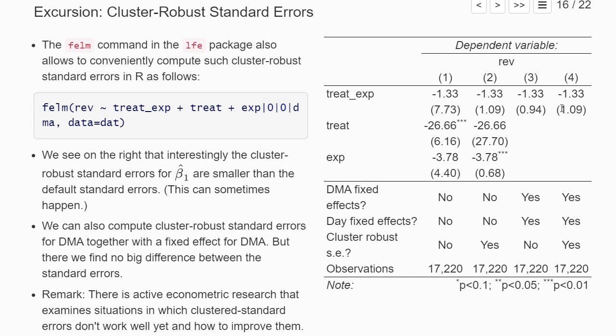You see that here the standard errors don't change much, so combining clustered standard errors and fixed effects typically doesn't have such a big impact. Clustering the standard errors makes them a little bit larger than the fixed effects regression without clustered standard errors, but it's not a big difference.